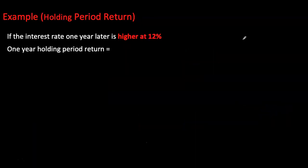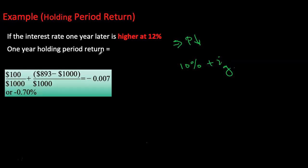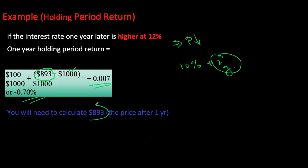Now let's do an example where interest rates rise one year from now. If interest rates go up from 10% to 12%, you should be able to predict that price will go down, because prices are present value calculations. The return again depends on the current yield of 10% plus the rate of capital gain. If the interest rate rises to 12%, the new price is $893, which is lower than the purchase price of $1,000. The rate of capital gain is therefore negative, pushing overall return down to −0.7%. We calculate the new price using the new interest rate and remaining time to maturity.